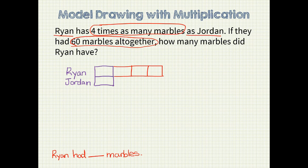I want to write a question mark for the piece that I need to find out. Since we need to know how many marbles Ryan had, that is where my question mark will go. I also know that they have 60 marbles all together, so I went ahead and wrote that. Can you see from this model what our next steps should be? We need to figure out how many marbles are in each unit bar. Since we have five unit bars all together and 60 marbles, this now becomes a division problem.